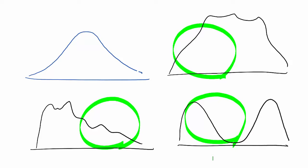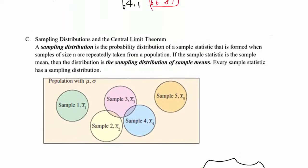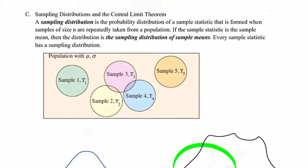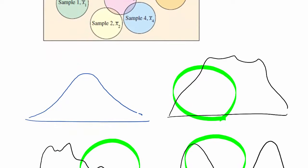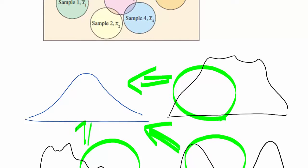Then do we have to throw this data away? No. We want to make this kind of non-normal data distribution into a normal distribution. That's why we call it sampling distribution basically — which means we convert all these different shapes to the normal shape. That's what we are doing in this video.